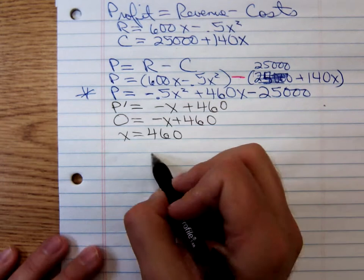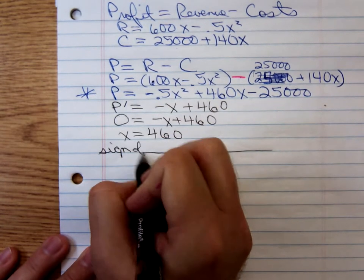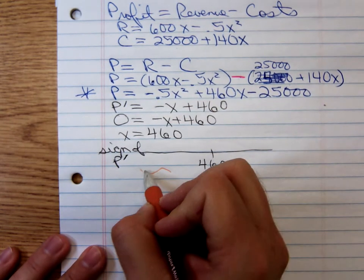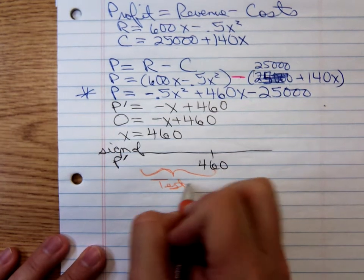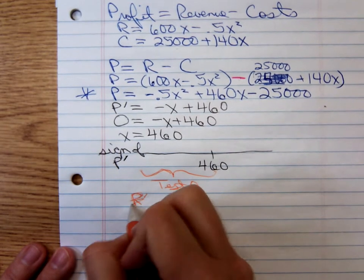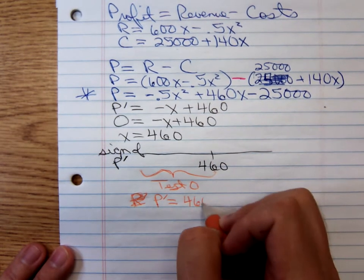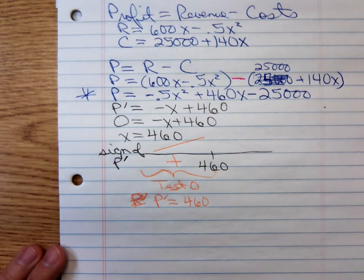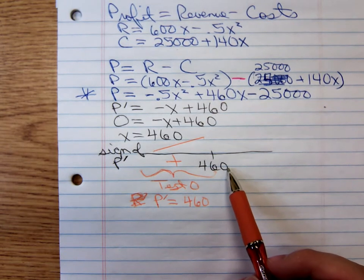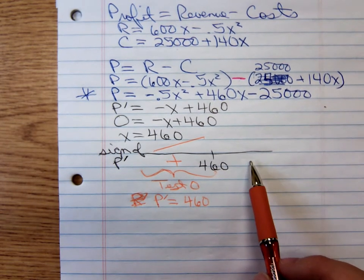Let's show that 460 corresponds to a maximum. We're looking at the sign of p prime. We're using the first derivative test. What's the smallest sensible number we could test to the left of 460? Zero. Testing zero, we get p prime equals, that'd be a zero plus 460. So it's positive increasing. We want to show that 460 is a local maximum, hence the absolute maximum, using that single critical number theorem. So if this is going to be where maximum occurs, what would better happen over here to the derivative?